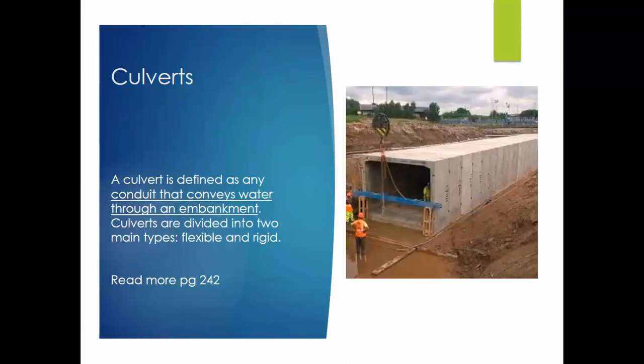A culvert is essentially the opposite of an open drain — it is defined as any conduit that conveys water through an embankment. Large culverts are found under roads and embankments and may need to be inspected physically by crawling through them — a common task for a site agent in their first year of work.